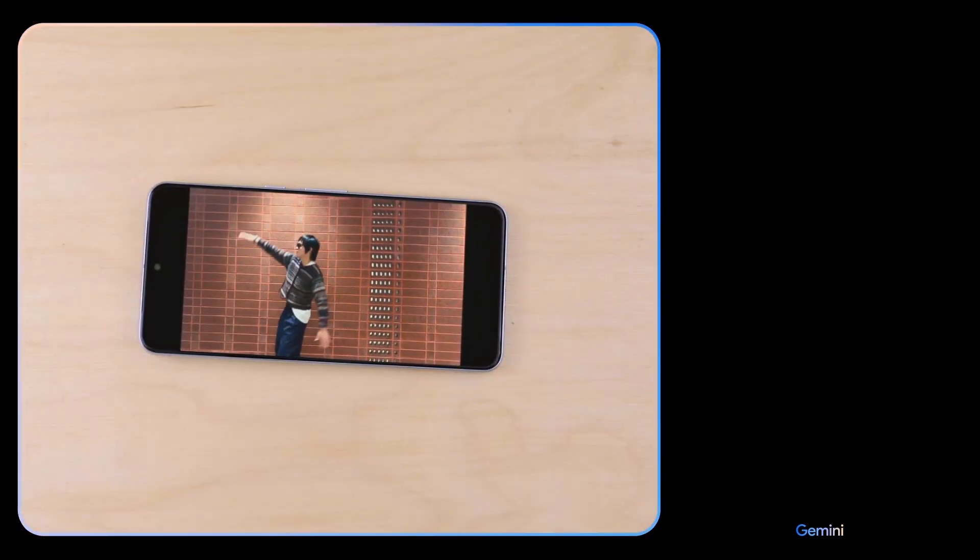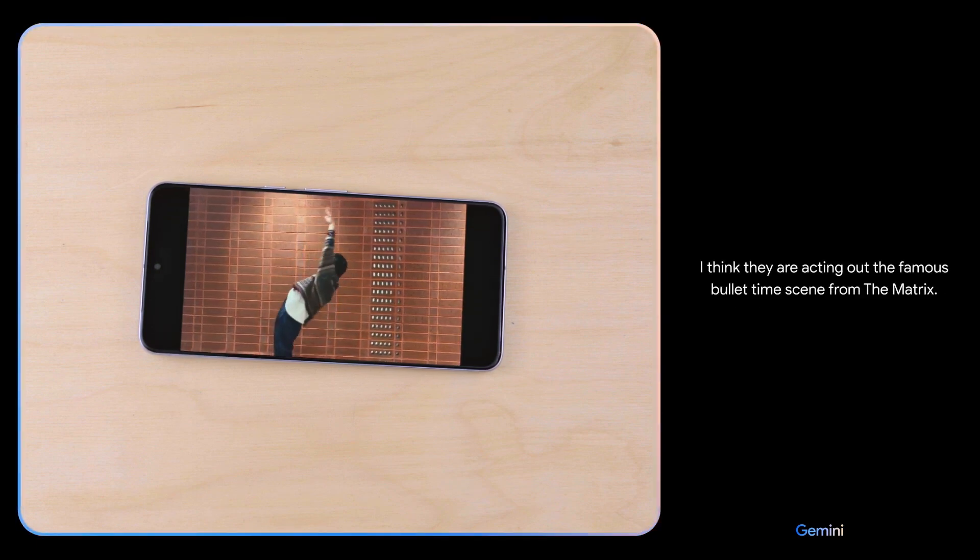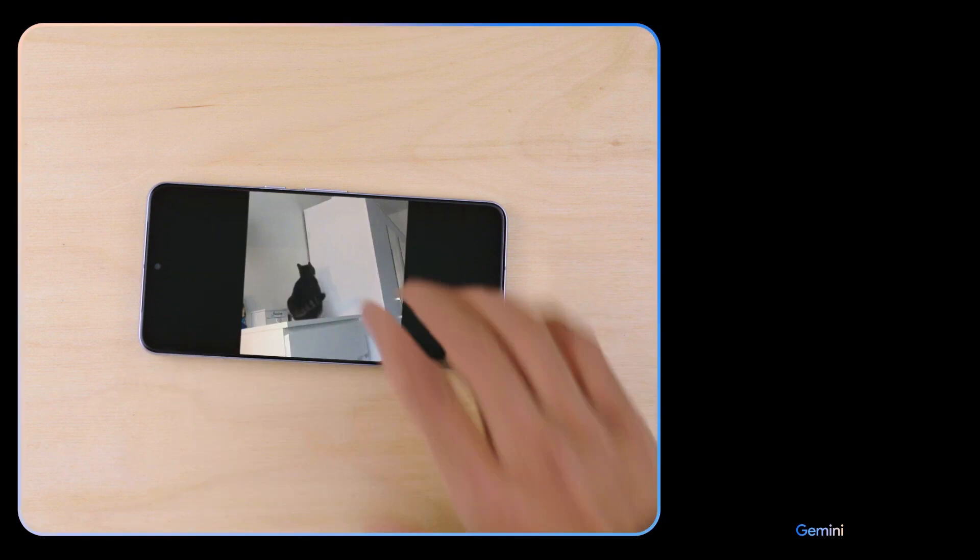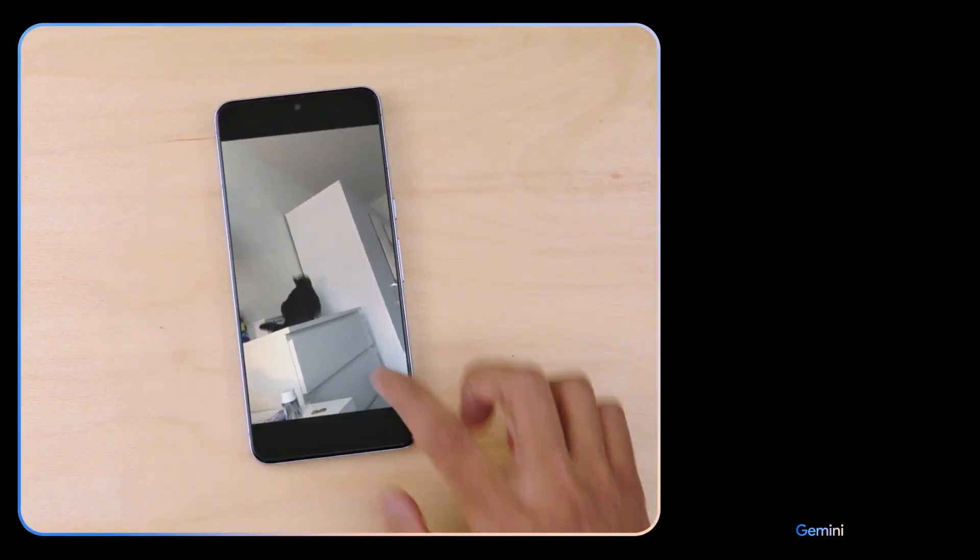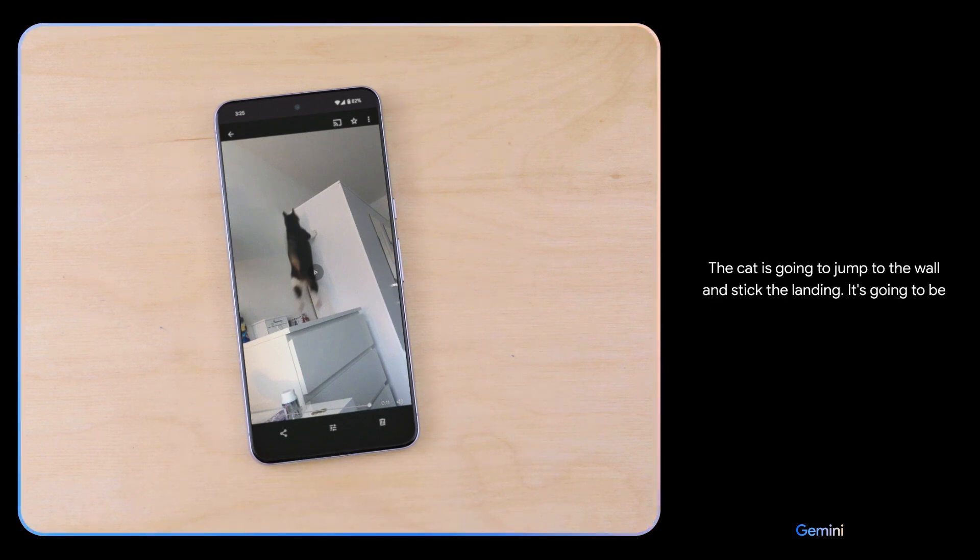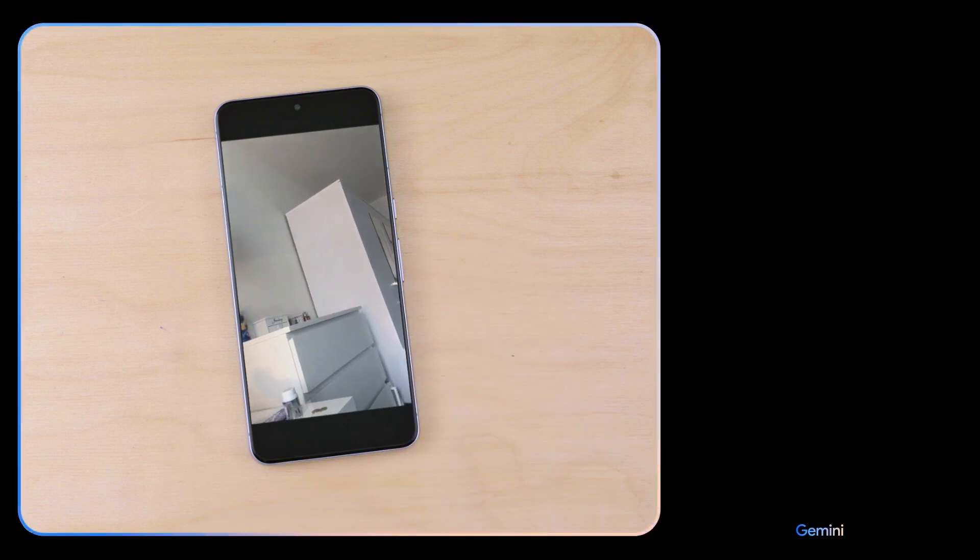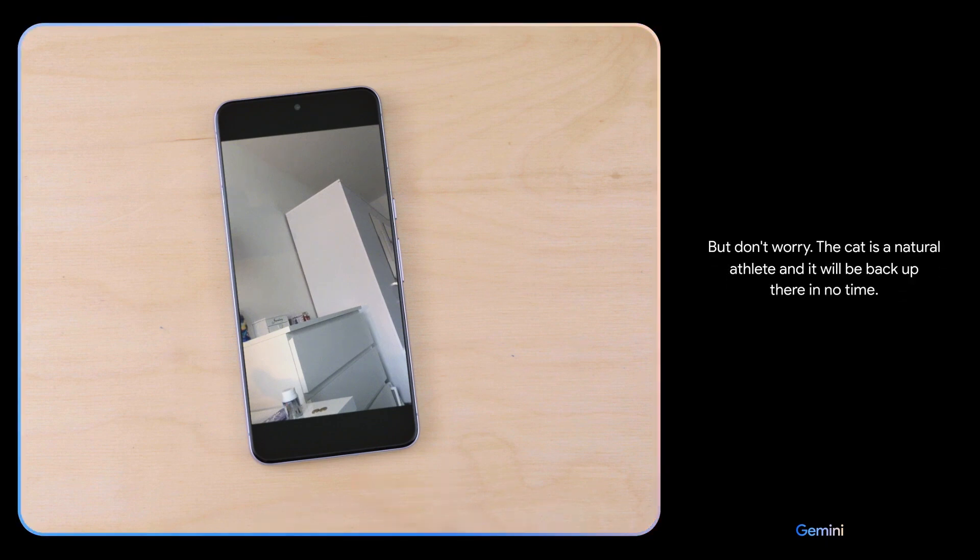What movie are they acting out here? I think they are acting out the famous bullet time scene from The Matrix. Nice. What do you think might happen next? The cat is going to jump to the wall and stick the landing. It's going to be a perfect 10. Oh, and it's a miss. It looks like it was just a little too far away. But don't worry. The cat is a natural athlete and it will be back up there in no time.